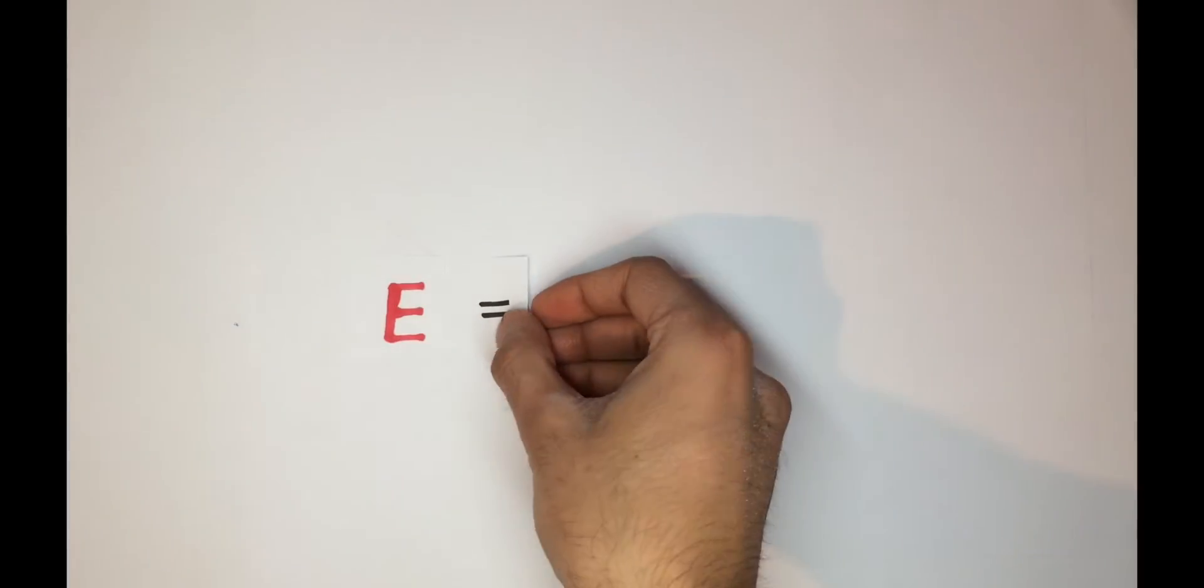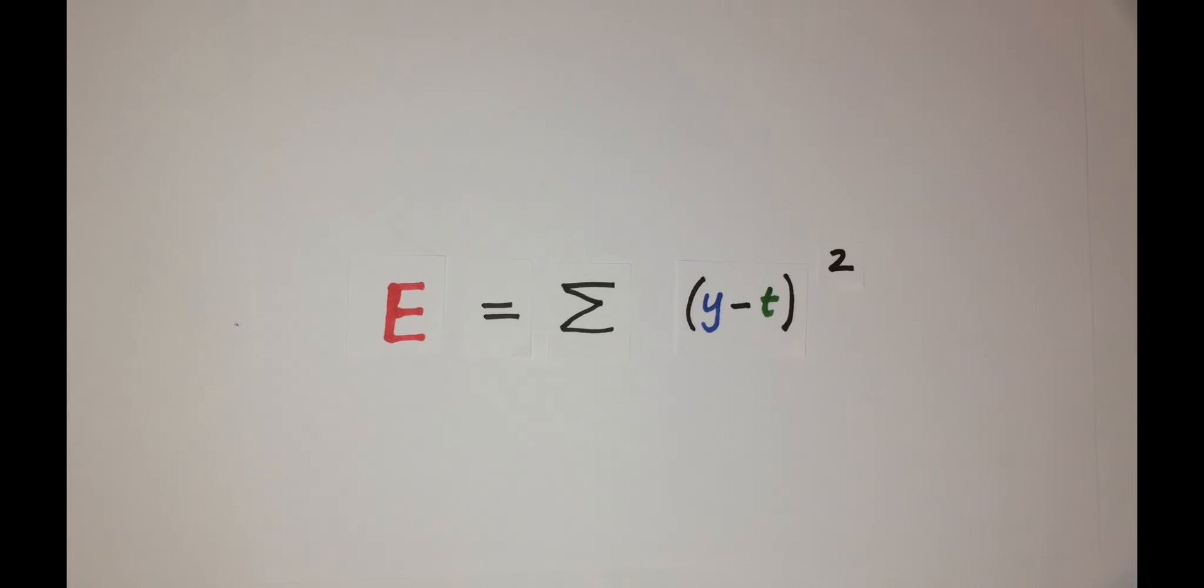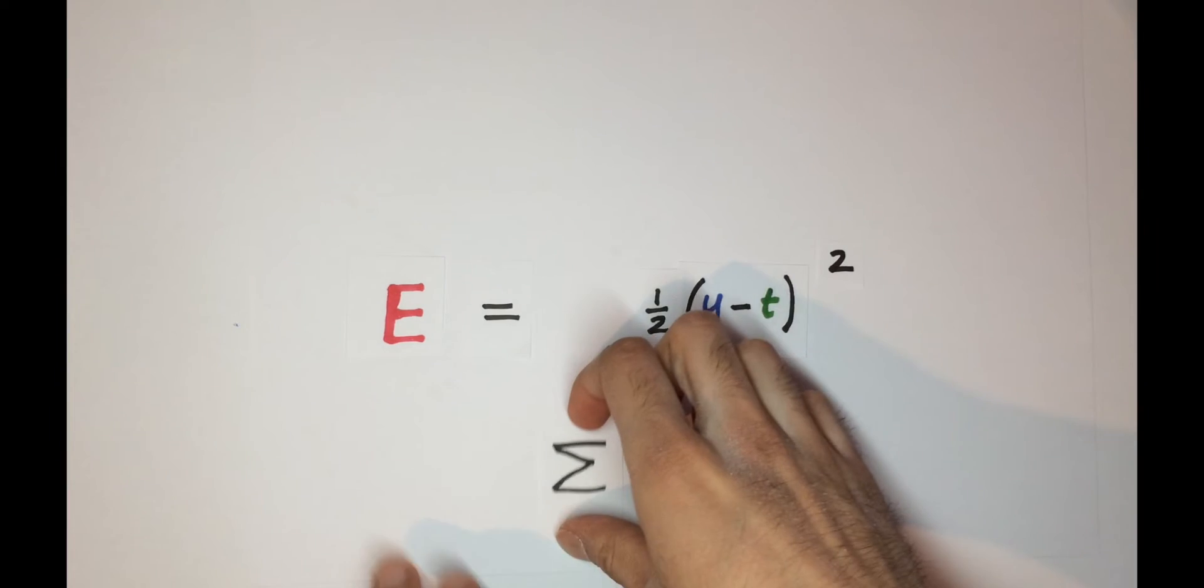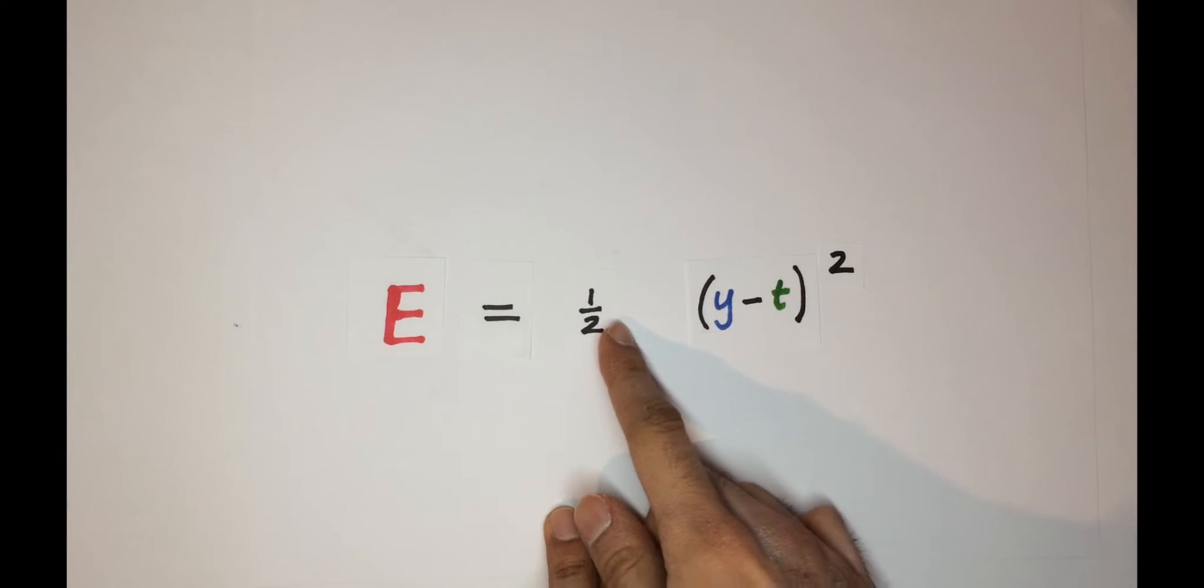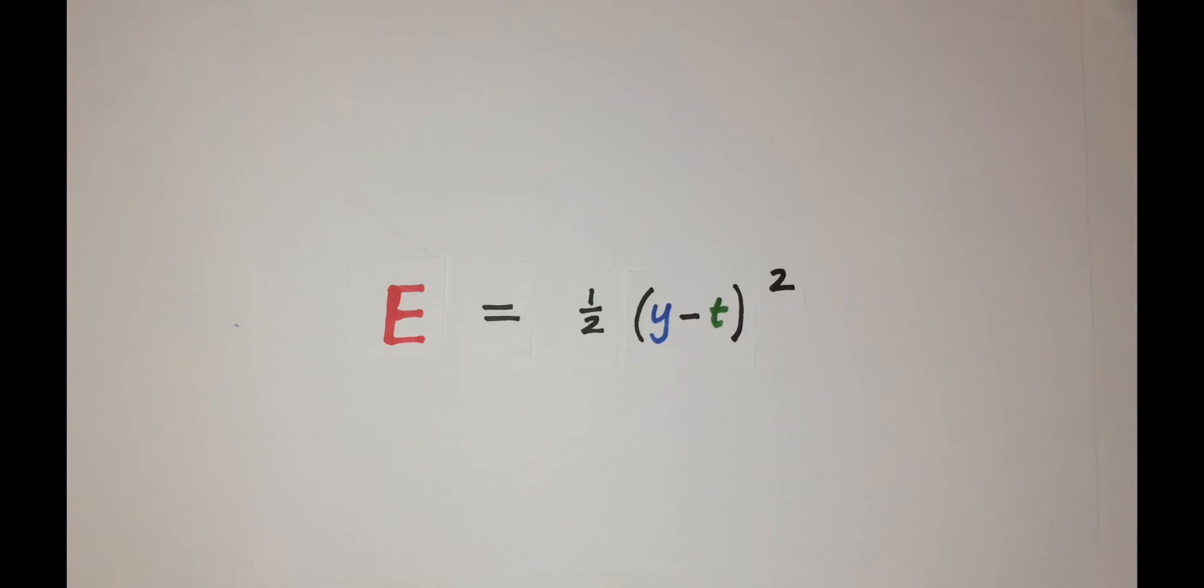But this can be defined with the equation e equals the sum of y minus t squared. And let's divide it by 2 to make the maths a bit easier. So for every data point, we are looking at its own squared error of e equals a half times y minus t squared. But as we saw earlier,